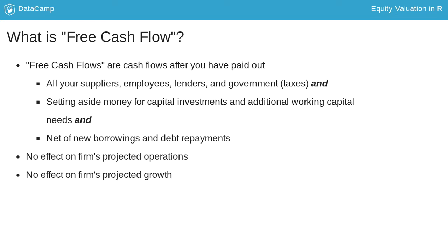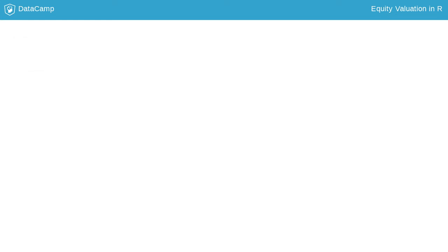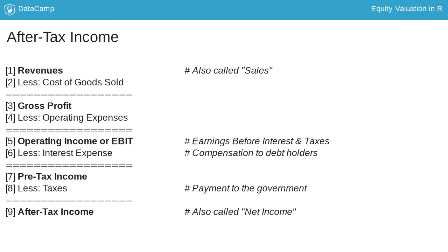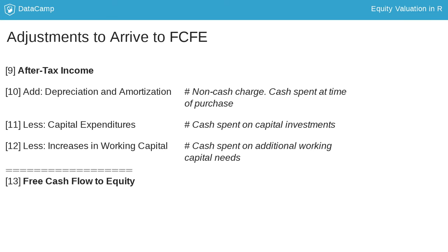The first step in an FCFE calculation is to calculate the after-tax income of the company. We first start with the firm's revenues or sales and subtract the cost of goods sold. The difference is called the gross profit. We then subtract operating expenses from the gross profit to arrive at operating income, sometimes called earnings before interest and taxes, or EBIT. Then we subtract interest from EBIT to get to pre-tax income, and subtract taxes from pre-tax income to get to after-tax income. After-tax income is calculated using accrual accounting, which means some components are non-cash items.